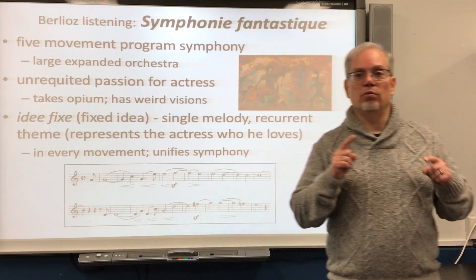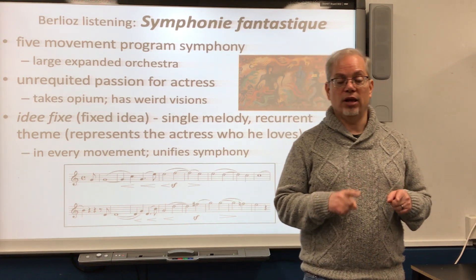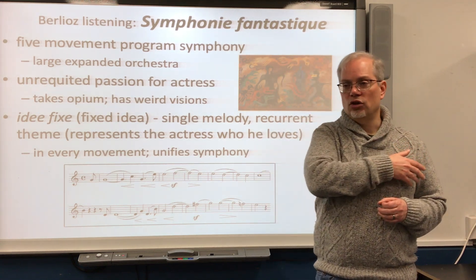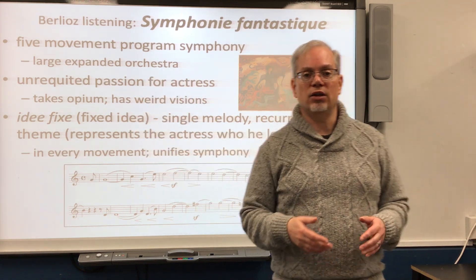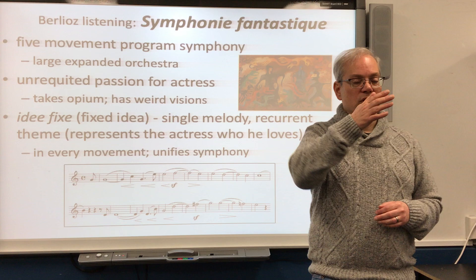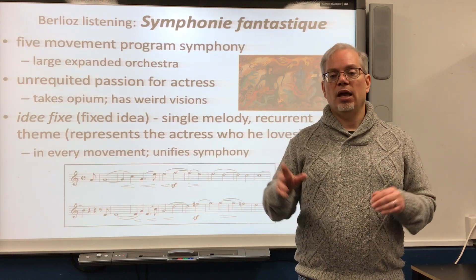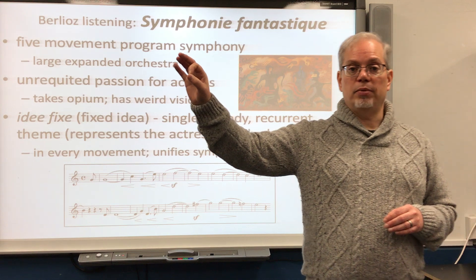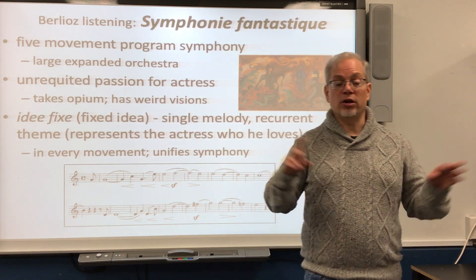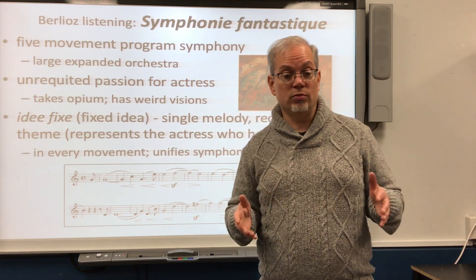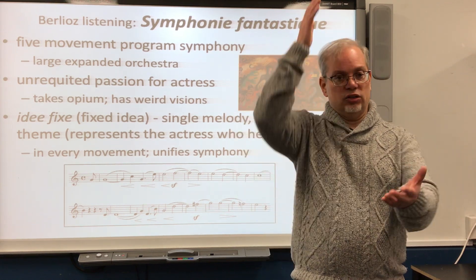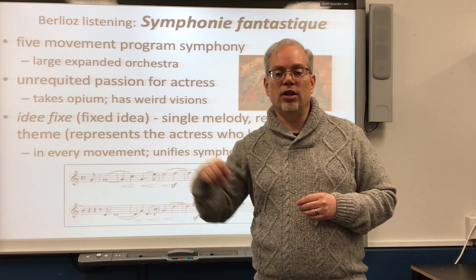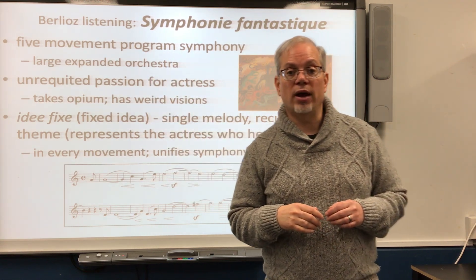In the fourth movement, he dreams that he has murdered the woman he loves and is being marched to his own execution by guillotine. The march lasts about six minutes — he's going through the streets of Paris, you hear the crowds alongside shouting at him. At the end of the movement, he goes up the scaffold, they put his head in the guillotine, he looks up, and at the front of the crowd he sees the woman he was supposed to have killed. You hear a solo clarinet play the beloved theme. But before he can say anything, the guillotine comes down. You actually hear it in the music — the whole orchestra goes 'bump,' the strings go 'plink plunk' — his head bouncing into the basket.